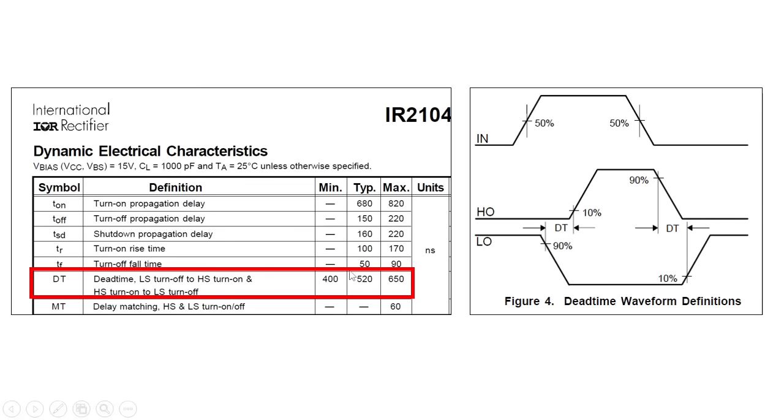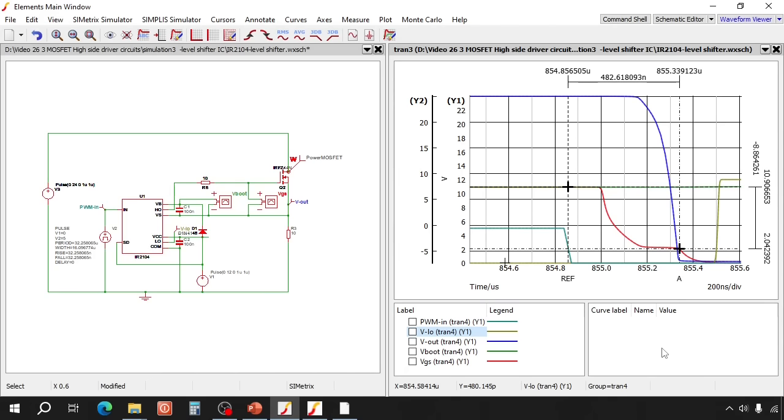If you check the datasheet, you see that the IC has a built in dead time of about 500 nanoseconds to prevent low out and high out from being on at the same time. So less than 1 microsecond is normally ok for power supply applications.